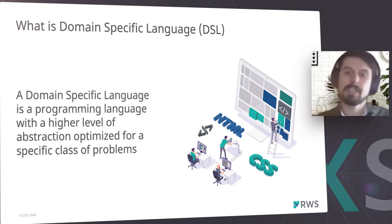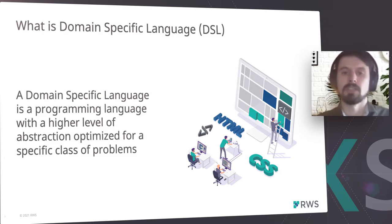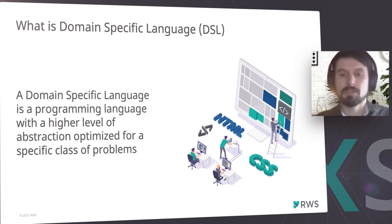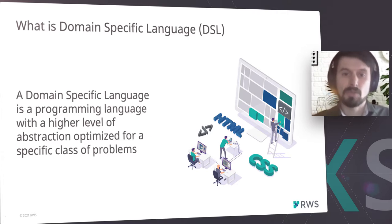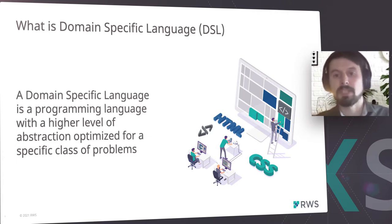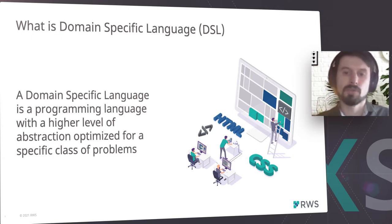General programming languages can be written to run standalone application programs like applications or interfaces. But there are situations where general programming languages just won't work nicely, or they will introduce a lot of complexity to your solution. A domain-specific language is a specialized language used for a specific purpose and used only to solve a specific problem, not more.